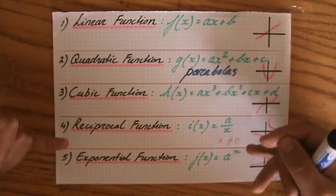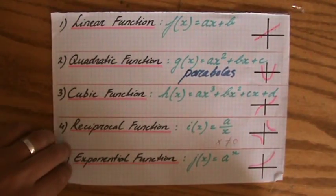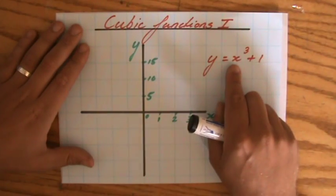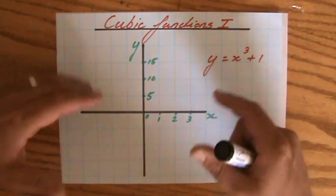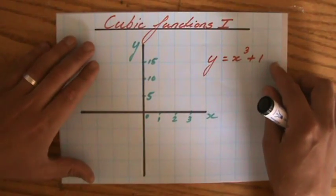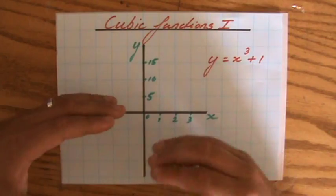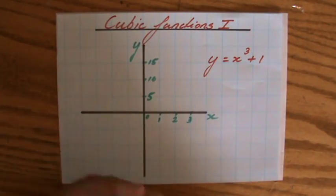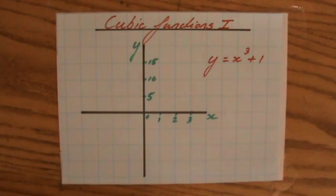We have reciprocal functions and exponential functions as well. So a cubic function, for instance the function x to the power of 3 plus 1, and we have to graph it. In the second part of this video we are going to solve by looking at our graph and also find the gradient at particular points.